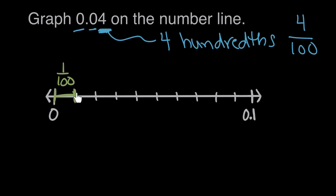So if one of these lengths is 1 hundredth, and we want to go 4 hundredths, then we're gonna need to go four of these lengths. One, two, three, four of these lengths would be four of the hundredths, or 0.04.